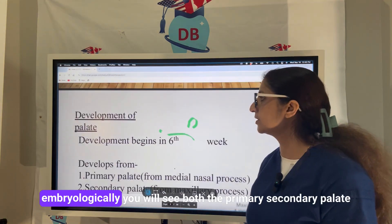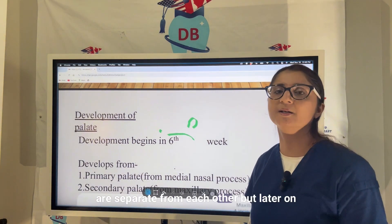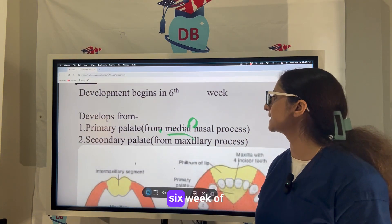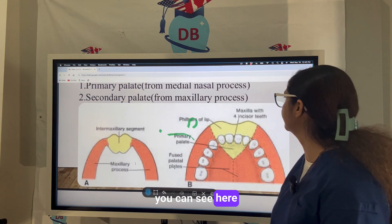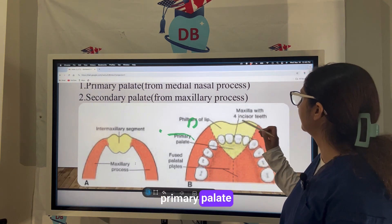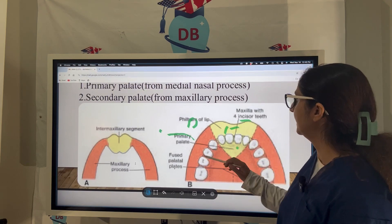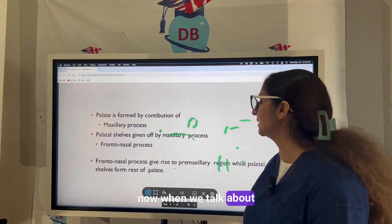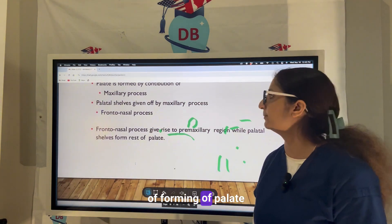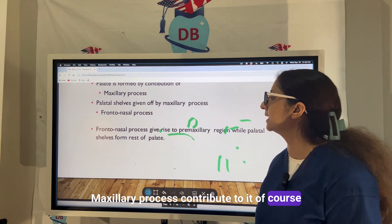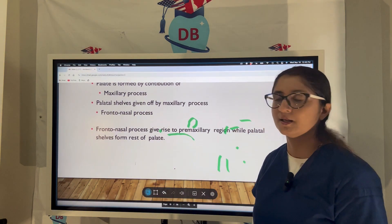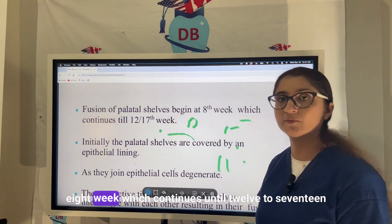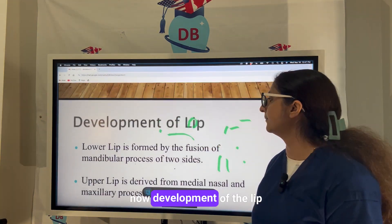Embryologically, the primary and secondary palates are separate from each other but later fuse to become continuous. Development of the palate starts around six weeks of embryonic life. The pre-maxilla (primary palate) contains four incisor teeth. The palatine shelves from the maxillary process make the secondary palate. Fusion of the palatine shelves begins at around eight weeks and continues until the 12th to 17th week.